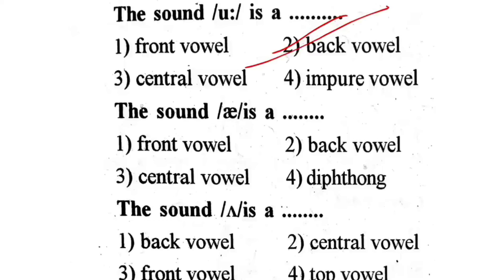Next question: The sound AE is — first one, front vowel. Second one, back vowel. Third one, central vowel. Fourth one, diphthong. The correct answer is first one — front vowel.